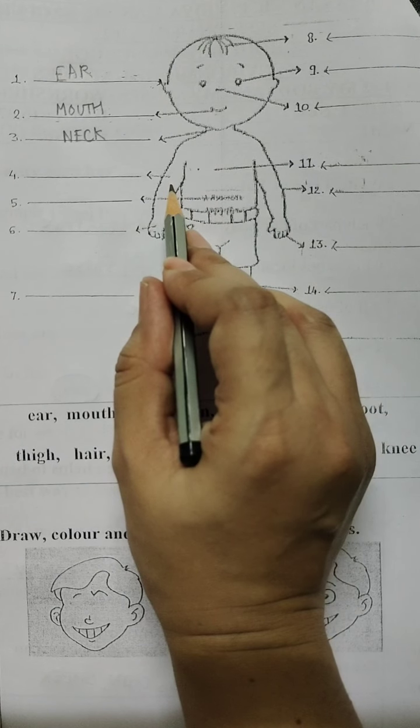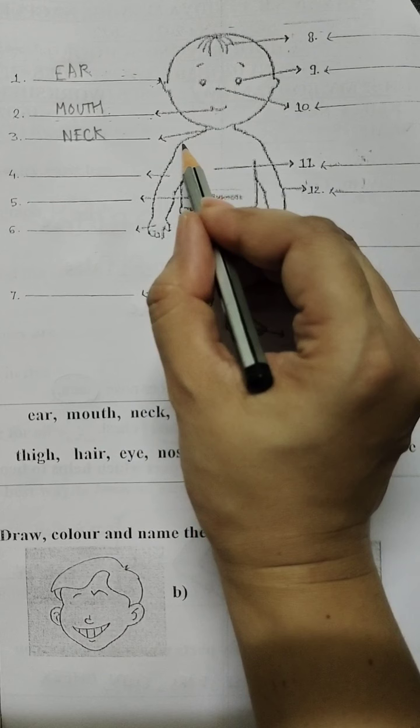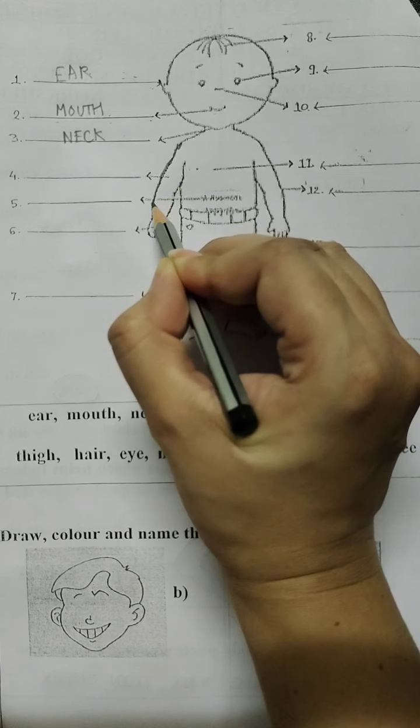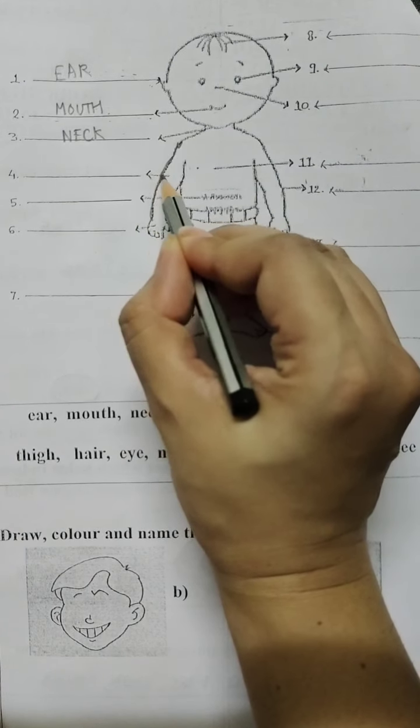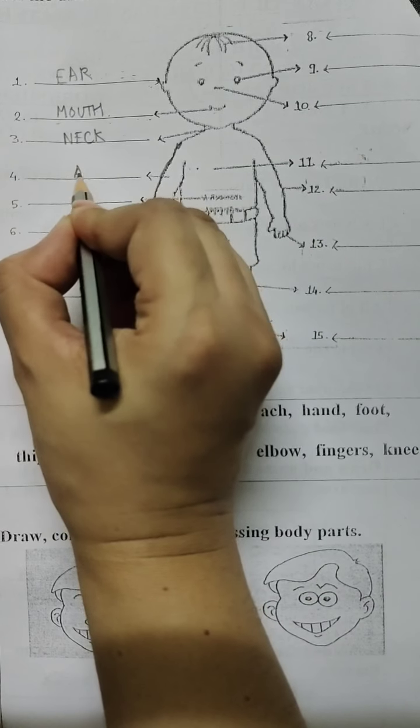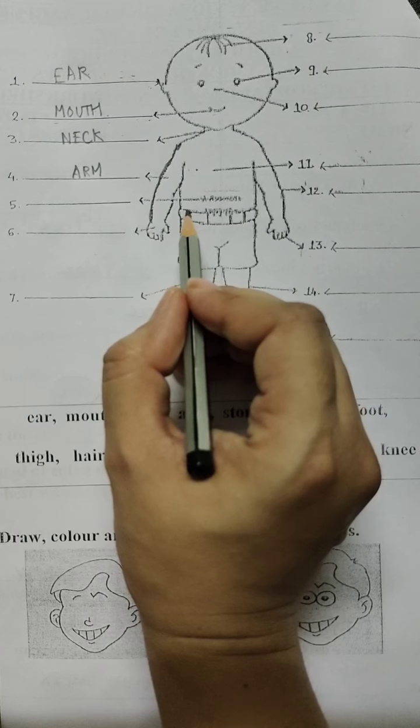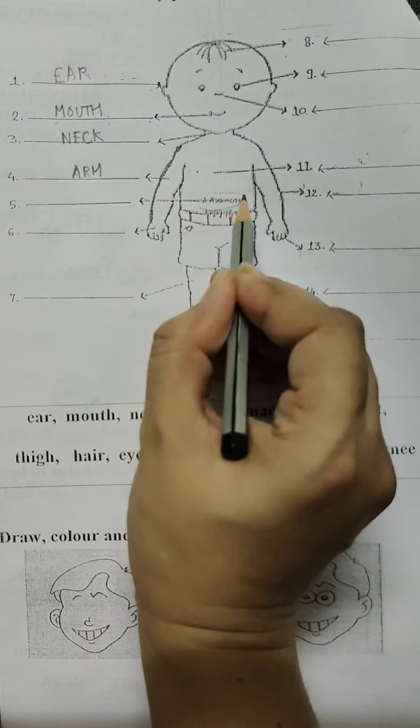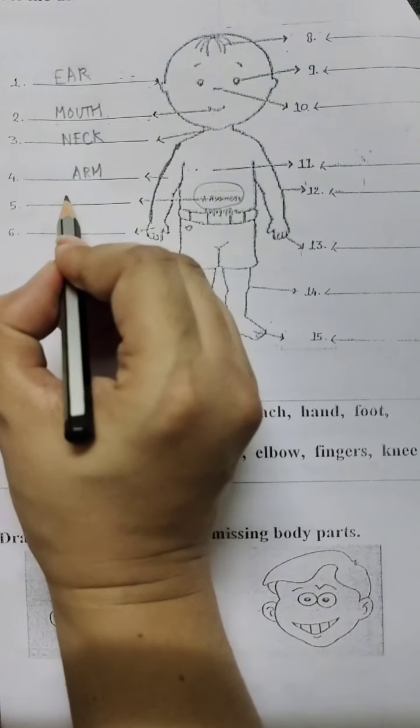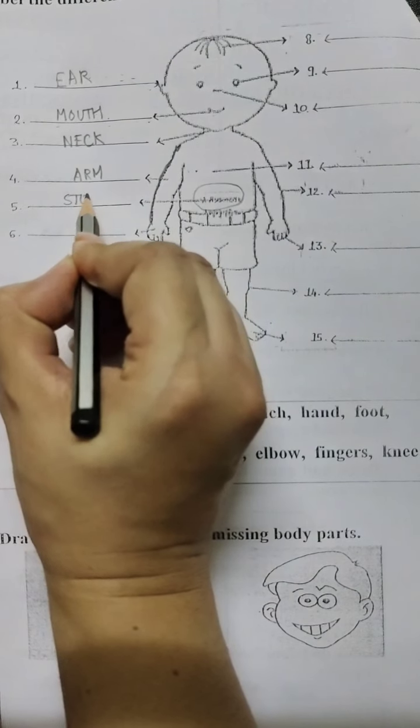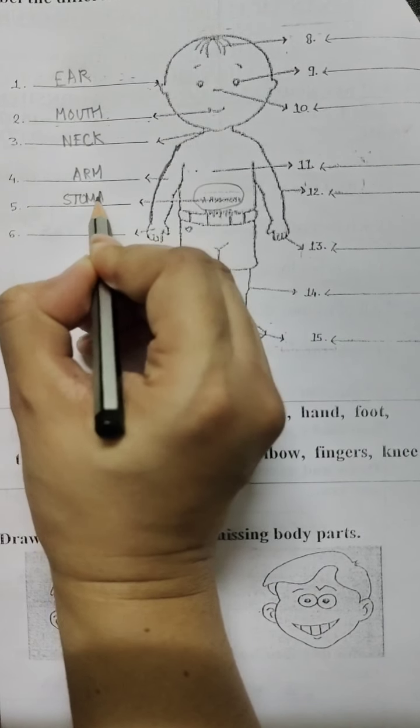Now students, this body part is the arm. As I told you, from the shoulder till the wrist, this entire portion is known as the arm. Now the next body part is the stomach. This is the place where the food gets digested. So we will write stomach.